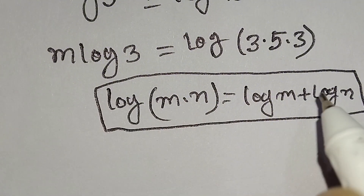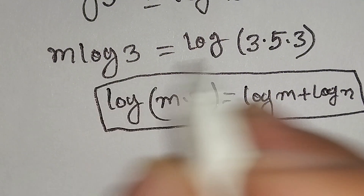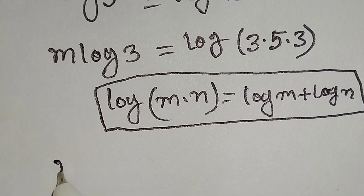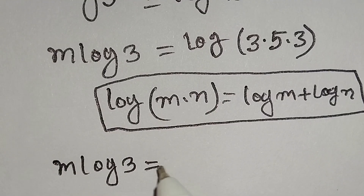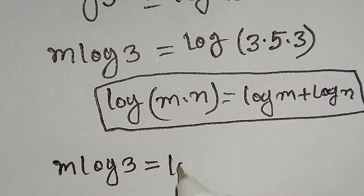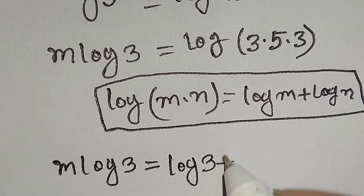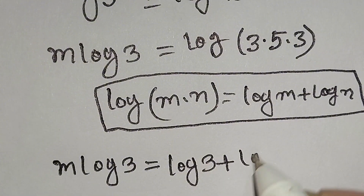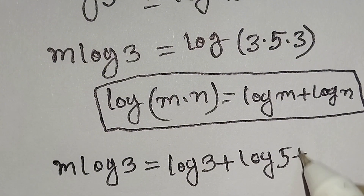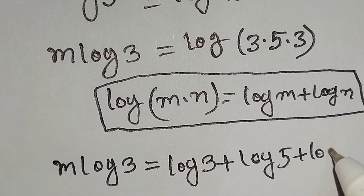According to this identity we can write m log 3 is equal to log 3 plus log 5 plus log 3.